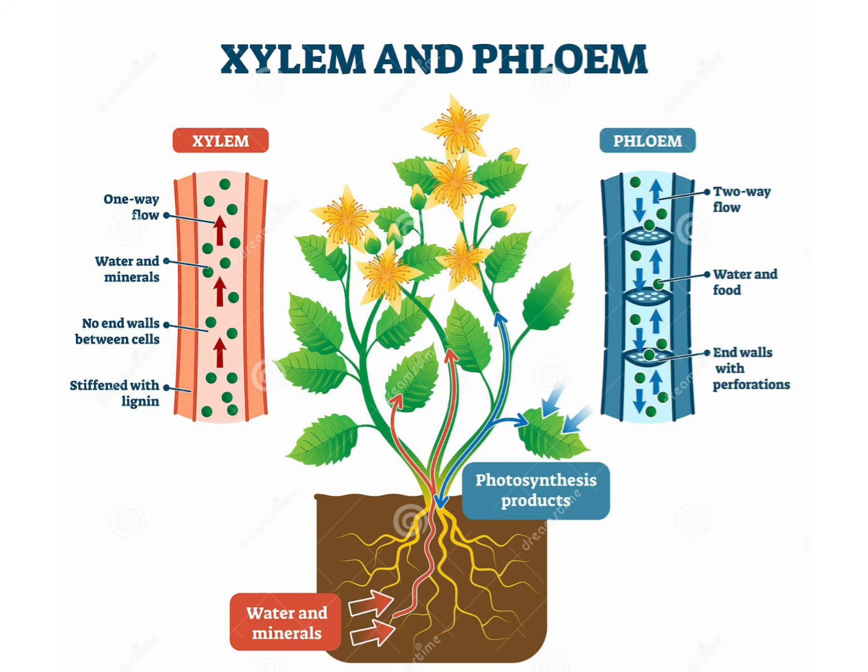The xylem vessel has one-way flow — water and minerals flow in one direction, as shown by the arrow in the red mark. But in phloem, it is a two-way flow, as shown by the blue marks. The water and food flows in the phloem.